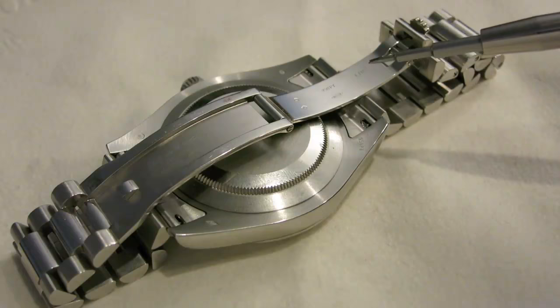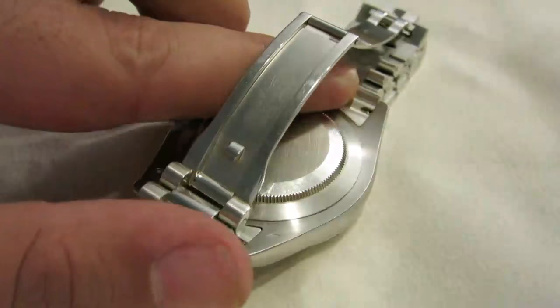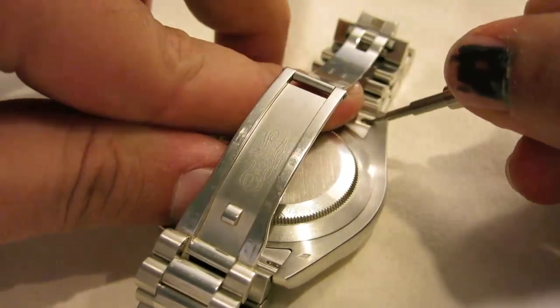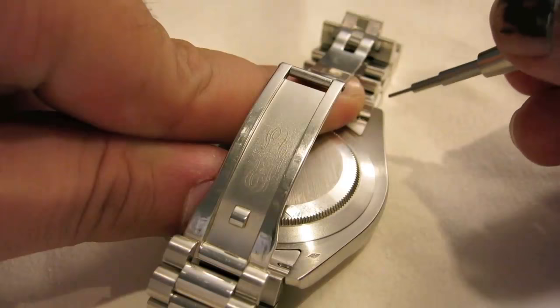In order to remove the band from the six o'clock side of the watch, gently place your index finger between the two spring bar sides. Take your tool and push the spring bar inward. Your index finger is meant to keep the spring bar from popping back in the hole on the case.